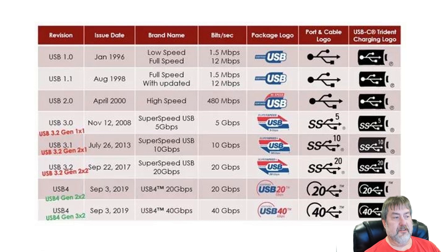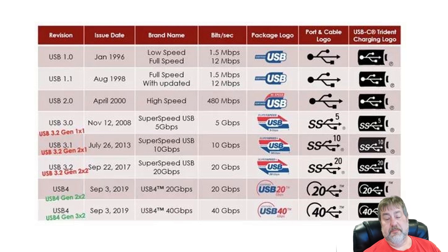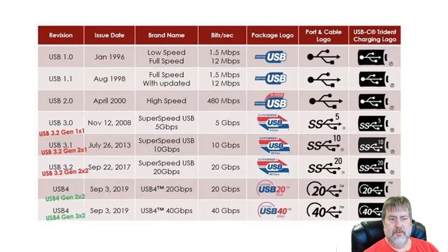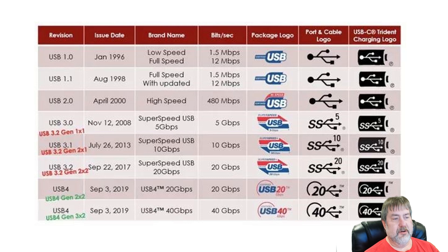Let's talk some speeds quickly — you can pause the video and study this slide. USB 4, which is really what we think of as USB-C today, can run at 20 gigabits per second or 40 gigabits per second, which is the same as Thunderbolt 4. There are some differences between Thunderbolt 4 and USB 4, which we'll touch on shortly. You can see the general progression of speed improvement over time.